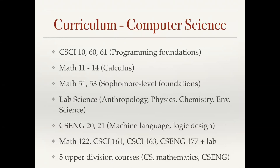Our curriculum in computer science includes a first-year sequence taught in C++. It begins with an introduction to C++, object-oriented programming, and data structures. We have four quarters of calculus and then a couple of sophomore level courses, one in discrete mathematics and one in linear algebra. Our students take a lab science in anthropology, physics, chemistry, or environmental science. They take a couple of classes in the computer science and engineering department: machine language and logic design.